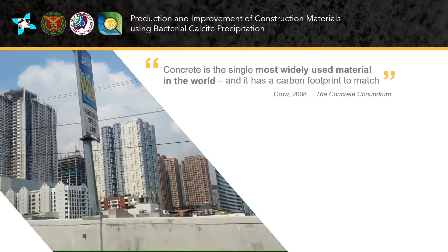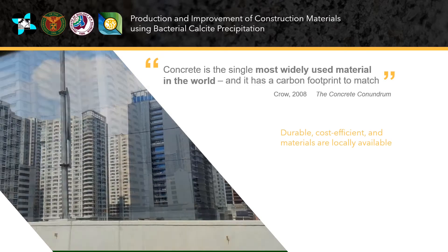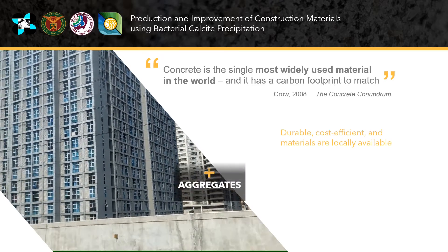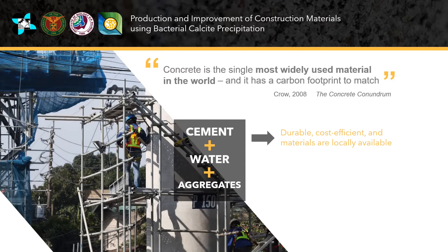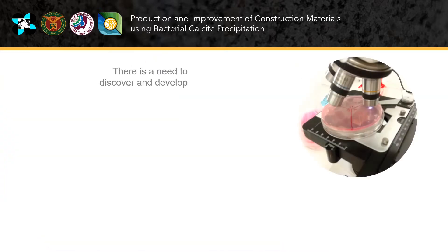Concrete, the most used man-made material in the world, is durable and cost-efficient — an ideal building material using only three ingredients: cement, water, and aggregates, that are cheap and readily available. Unfortunately, cement, the key component of concrete, comprises up to 80 percent of the total greenhouse gas emission of concrete.